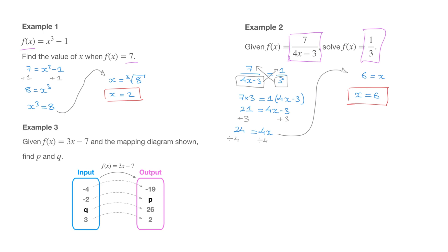That's the answer. For the input value x equals 6, f of x will equal 1 over 3. To verify, all we have to do is replace every x inside f of x by 6. So f of 6 equals 7 over 4 times 6 minus 3, which equals 7 over 24 minus 3, which equals 7 over 21, which is indeed equal to 1 over 3.